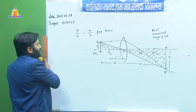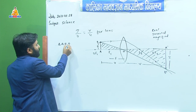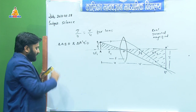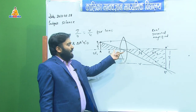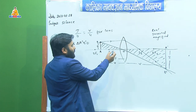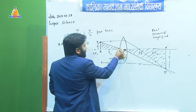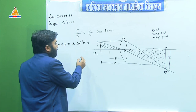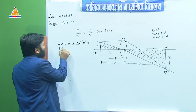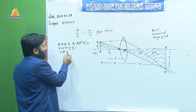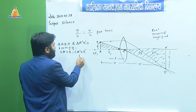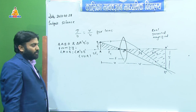From the figure we can see that triangles ABO and A'B'O are similar. The angles at O are vertically opposite, angle BAO and angle B'A'O are both 90°, and the remaining angles are therefore also equal. So by the AAA (angle-angle-angle) property, the two triangles are similar.